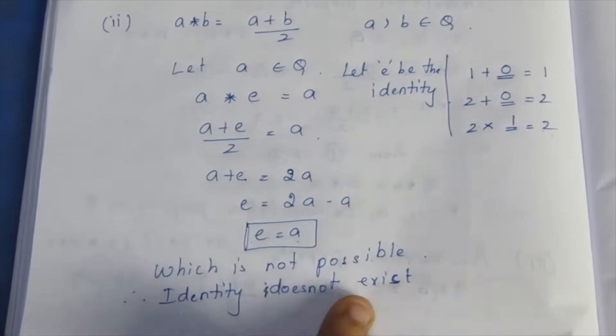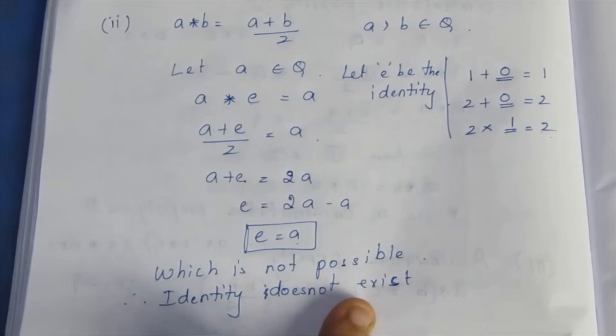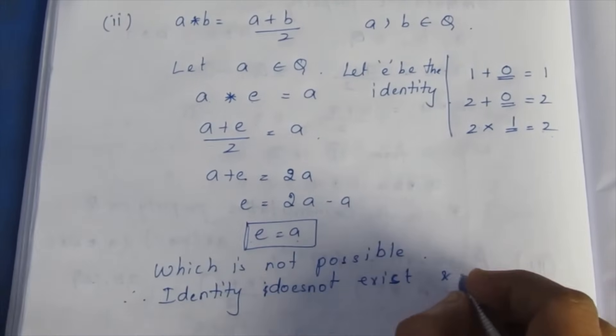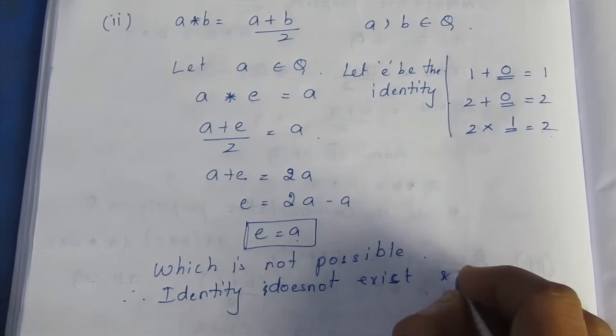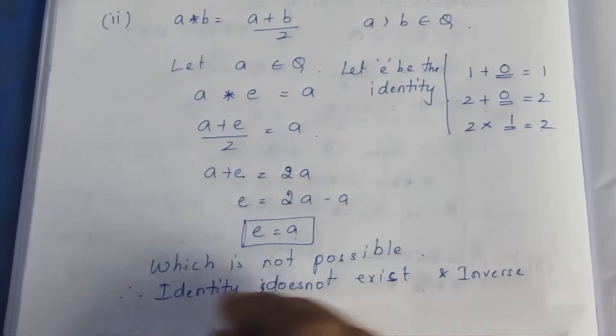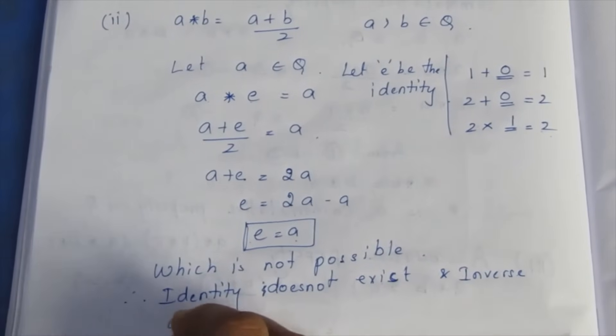Since the identity does not exist, the inverse also does not exist.